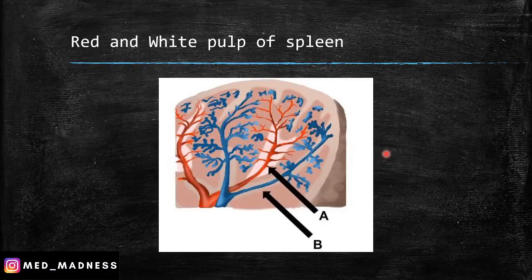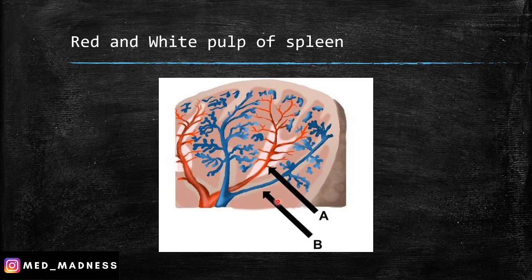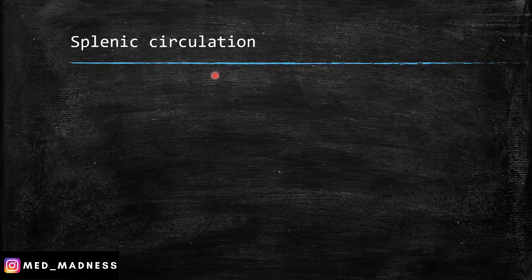Red pulp consists of the sinusoids and the cords of Billroth. Here you can appreciate the PALS — peri-arterial lymphatic sheath — that is around the splenic artery and arterioles. And the major component of the spleen is red pulp.